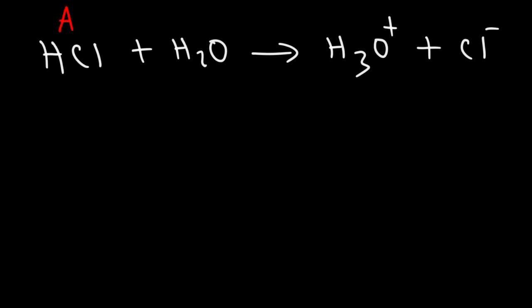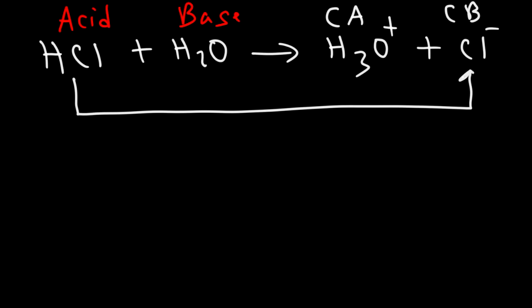So this is the acid. This is acting as the Bronsted-Lowry base because it's a proton acceptor. Acids are proton donors. They give up the hydrogen. And this is the conjugate acid, and that is the conjugate base. So whenever an acid loses a hydrogen atom, it turns into the conjugate base. And whenever the base accepts a proton, or a hydrogen ion rather, it turns into the conjugate acid.